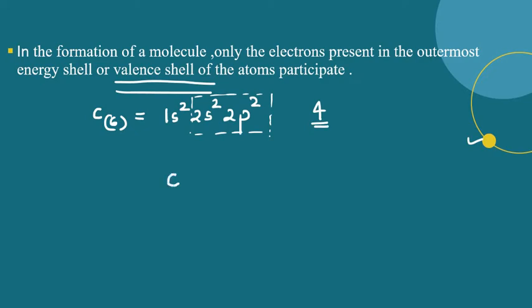So according to the Lewis symbol, we represent the valence electrons using dots. In the dot notation, the symbol represents the total number of valence electrons.